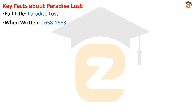Let's discuss the key facts of the epic poem Paradise Lost. The full title of this poem is Paradise Lost. It was written around 1558 to 1663 because it was an epic poem — the grand poem of John Milton, his magnum opus. That's why it took five to six years to compose.